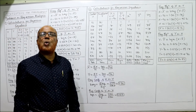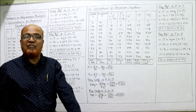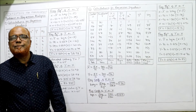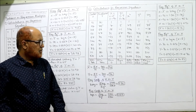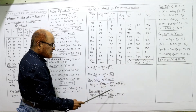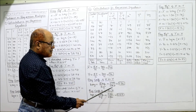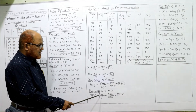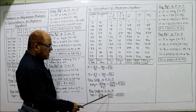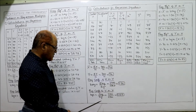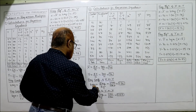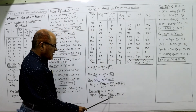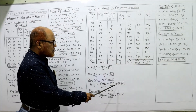Now calculate the regression coefficients BXY and BYX. BXY = summation xy ÷ summation y² = 3900 ÷ 2868 = 1.36. BYX = summation xy ÷ summation x² = 3900 ÷ 6360 = 0.613. We now have both regression coefficients and can substitute into the regression equations.